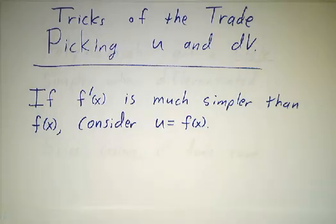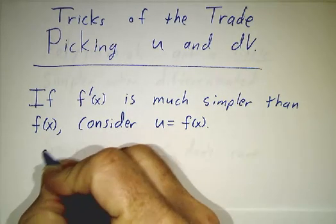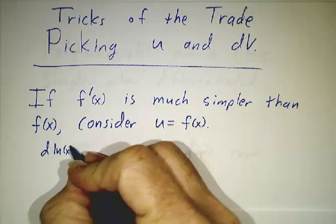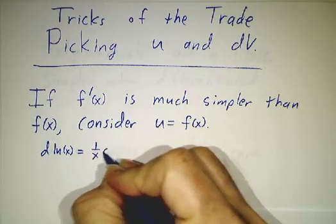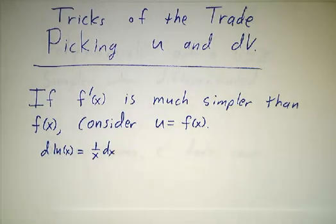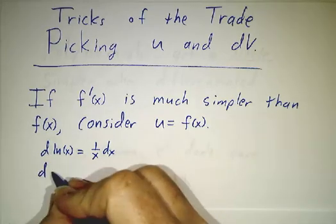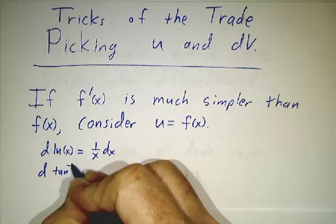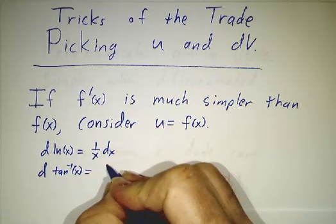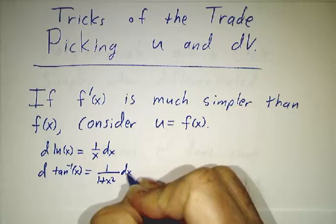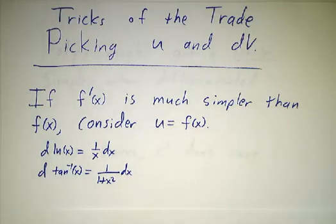The first thing is that there are some functions that get much simpler when you differentiate them. If you take the derivative of the natural log of x, you get 1 over x dx. That's way simpler than natural log. If you take the derivative of the arctangent of x, you get 1 over 1 plus x squared dx. That's way simpler than arctangent.